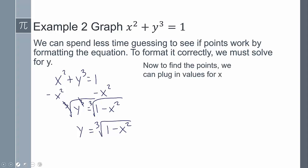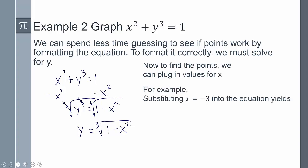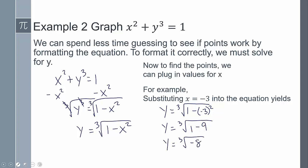Now that y is by itself, I can start plugging in values for x to find y. You, as the mathematician, get to choose the x values — you could choose negative 3, negative 2, 1, 5, 100, a million. I decided to choose negative 3 and plugged it in. Negative 3 squared is positive 9, so 1 minus 9 gives the cube root of negative 8, which is negative 2. So the point is (−3, −2), and that value is on the graph.